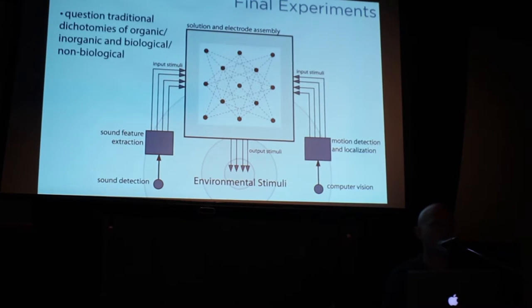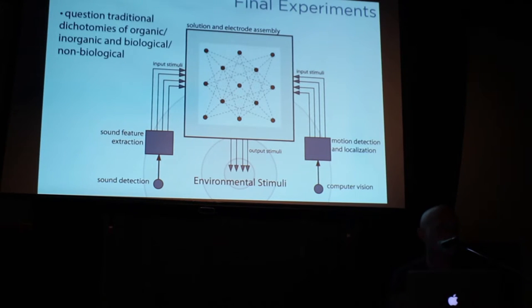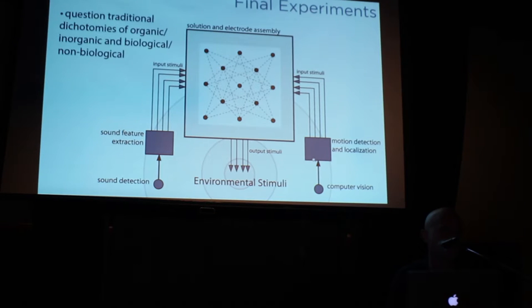On one hand we fed information about motion in the environment into the tank, and we also fed information about various frequencies of sound. Each different electrode corresponded to a different place within the gallery space, and each anode or cathode corresponded to one particular frequency of sound. If you had sound detection at a particular frequency, it would open the gates to one of the anodes; if you had motion detection in a particular location, it would open one of the cathodes, thus completing the circuit, causing growth, and creating what we called an associative process.